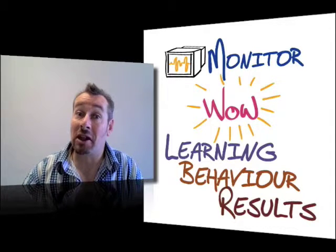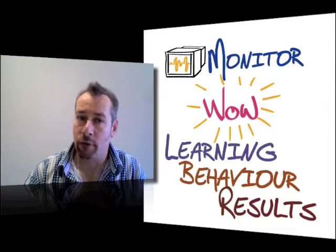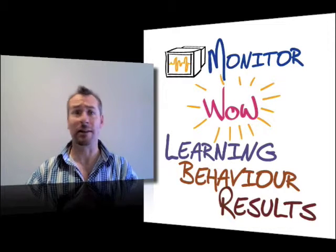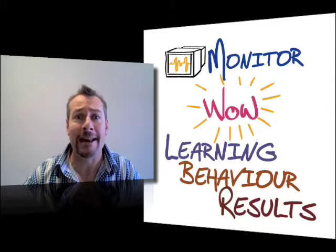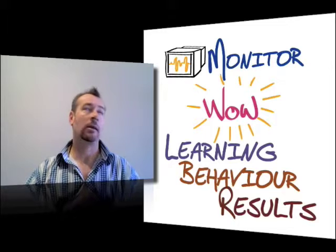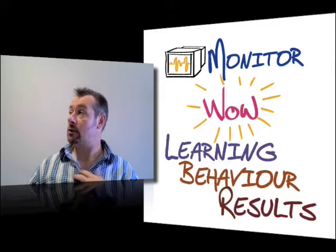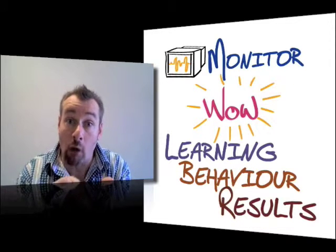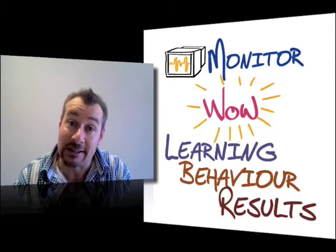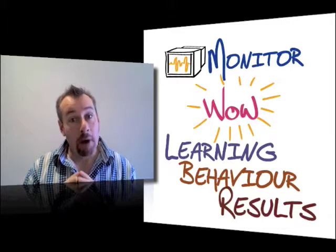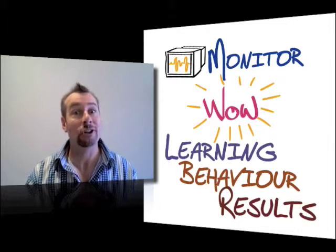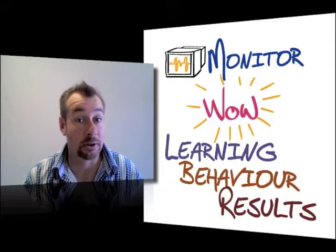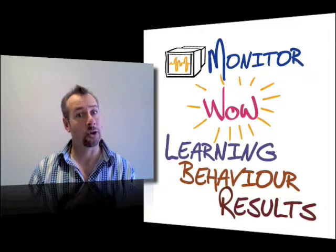We identified that there are four levels — four places we can look for criteria. First of all, there is the wow factor, the emotional response. What response are you getting in your coaching session? Are you getting these sorts of behaviours — people writing notes and asking questions? That's feedback. Some people use happy sheets at the end of training courses to assess emotional response. There is value in that, and it's not the be-all and end-all.